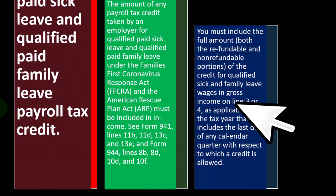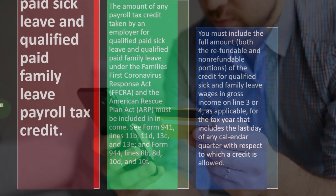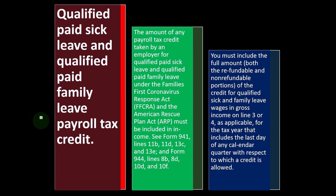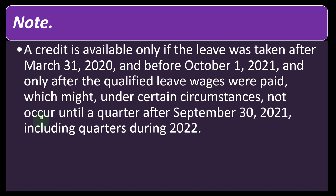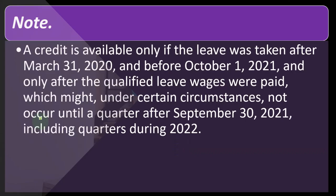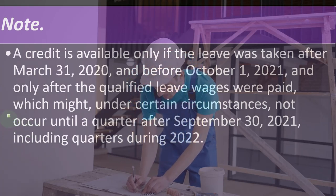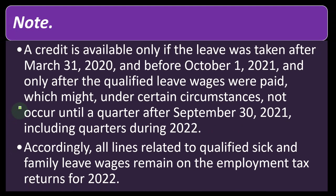You must include the full amount — both refundable and non-refundable portions — of the credit for qualified sick and family leave wages in gross income on line 3 or 4, as applicable, for the tax year that includes the last day of any calendar quarter with respect to which a credit is allowed. A credit is available only if the leave was taken after March 31st, 2020 and before October 1st, 2021. All lines related to qualified sick and family leave wages remain on employment tax returns for 2022.